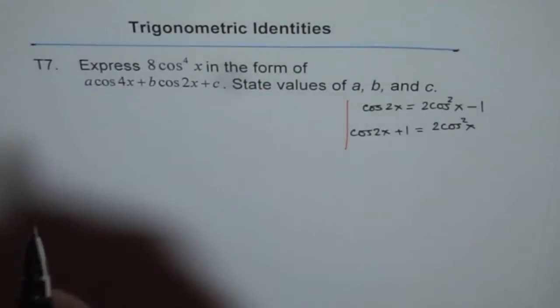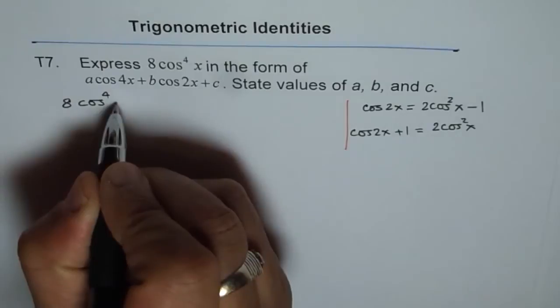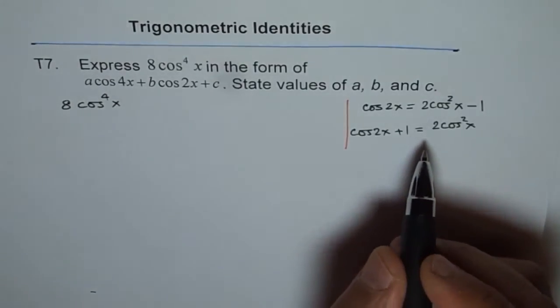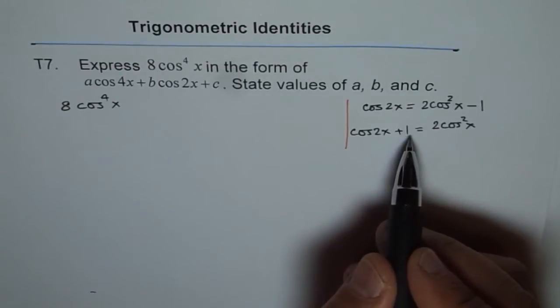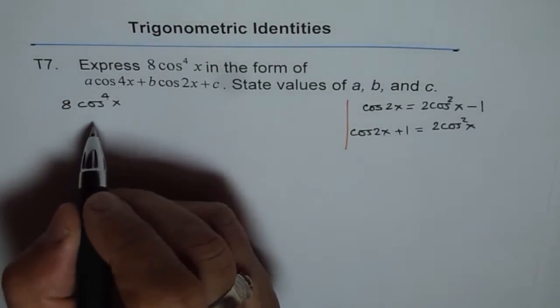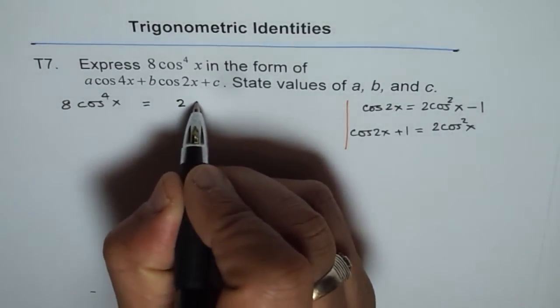So what we are given here is 8 cos to the power of 4x. Now what we can do is, we know 2 cos square x is cos 2x plus 1. So we can write this as equal to 2 cos,